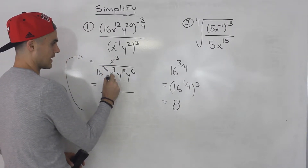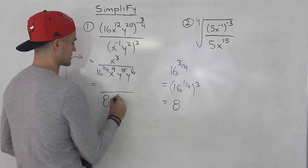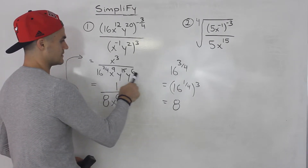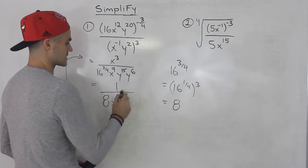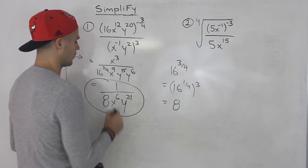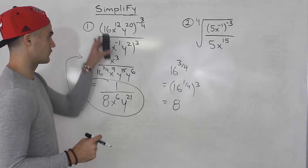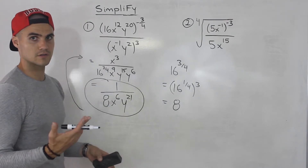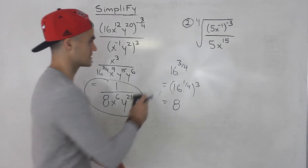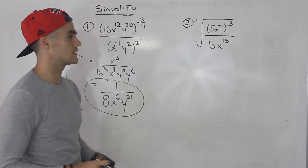x to the power of 3 over x to the 9 — 3x is up top, 9x is on the bottom, so we are left with 6x on the bottom, and then there's a 1 left up top. For the y terms, 15 plus 6 gives us 21. So the final answer is 1 over 8 x to the 6 y to the power of 21. You may do this in different ways — just make sure you're getting this right answer. If you're getting the right answer consistently, then your method is correct.